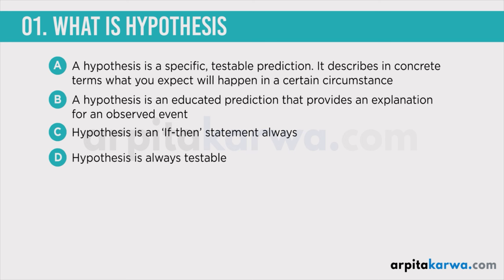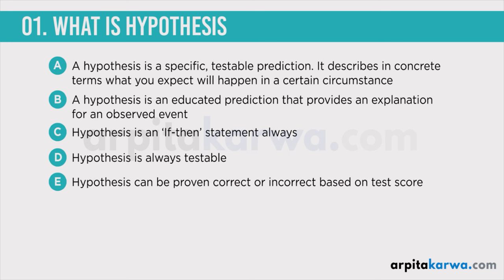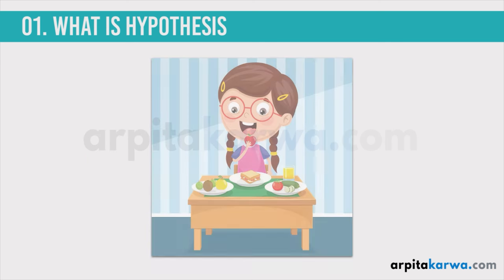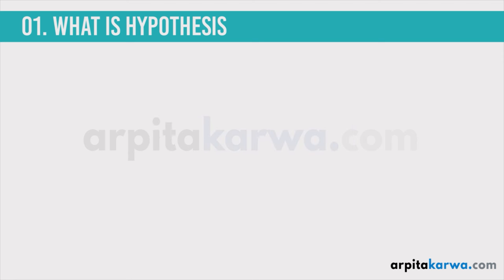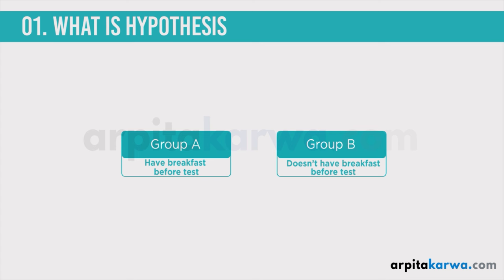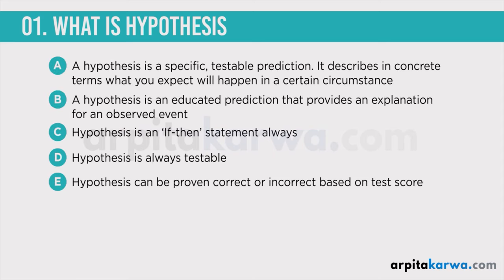When it comes to testing the hypothesis, it can be proven correct or incorrect based on the result of the experiment. Suppose you carry out an experiment where you say that if students eat breakfast and give the exam, then they tend to score better. You take two groups — one group has breakfast before the test, another group has no breakfast. Both groups take the test and their scores are compared. If scores change according to what you predicted, your hypothesis is correct. If they don't change, or change in the opposite direction, you reject your hypothesis.